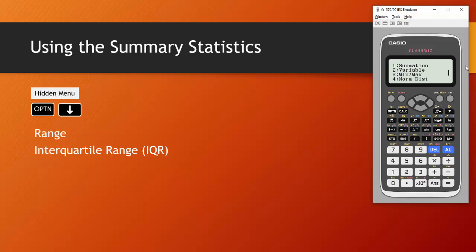So there's summation, variable, minimum, maximum and normal distribution. We're not going to be doing normal distribution but if we go into option one, summation, this simply shows the sum of X and the sum of X squared. We can go back and go into variable. We've got X bar so the mean, sigma squared X which is the variance, sigma X which is the standard deviation.